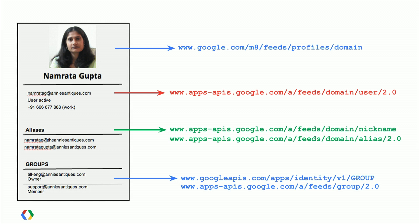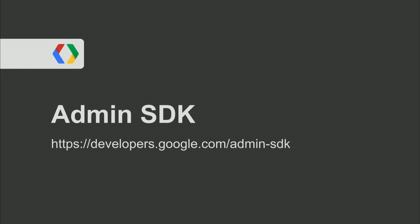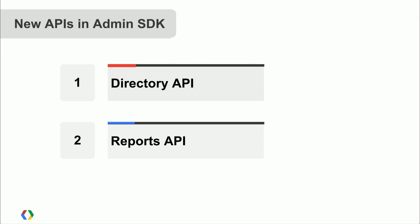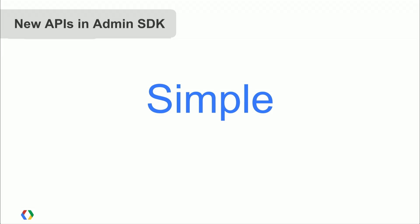I have good news: today we're launching the Admin SDK. The Admin SDK is a brand new developer experience around managing things in your Google Apps for Business domain. We're launching two APIs today: the first is the Directory API, and the next is the Reports API. The goal of these two APIs is to be as simple as possible, giving you all the data and actions you need while getting out of your way.